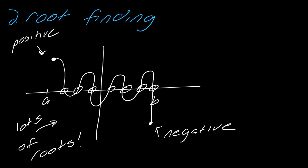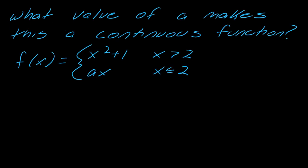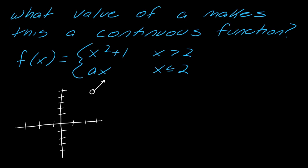So there's two exercises that typically come up that are kind of related to these properties. Okay. So related to these ideas is this question. So what value of A makes this a continuous function? So this is a piecewise function. I've got x^2 + 1 when x is greater than two,